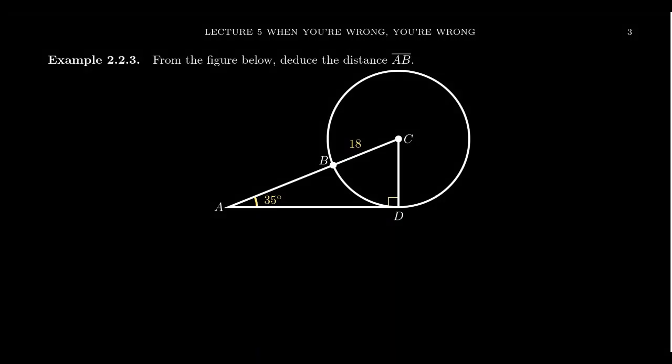Consider the figure provided, where we have a right triangle ACD with a right angle at D. This triangle also shares points with a circle centered at point C, such that BC and CD are both radii of that circle.